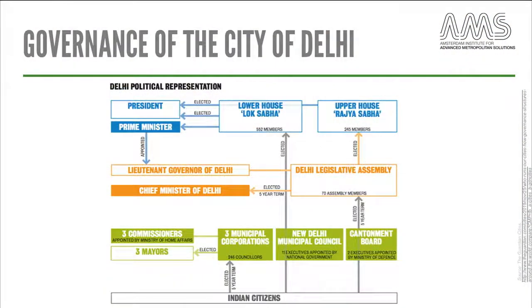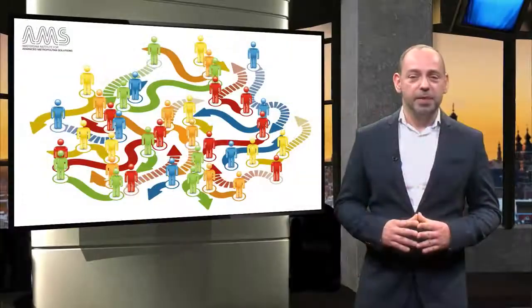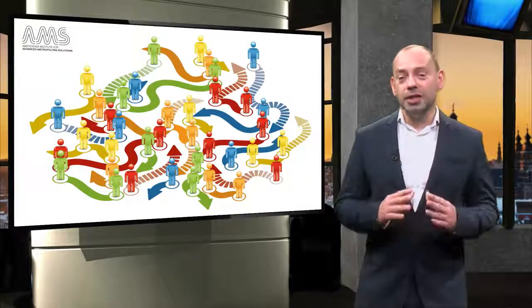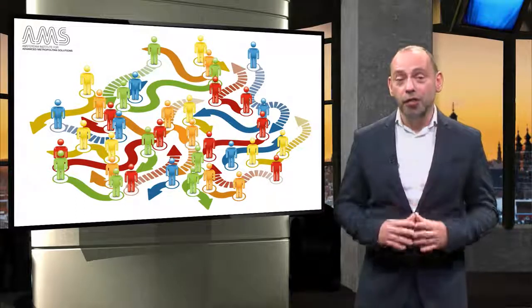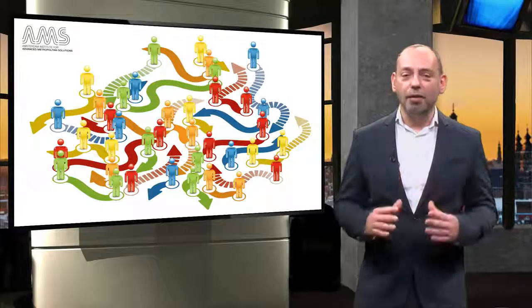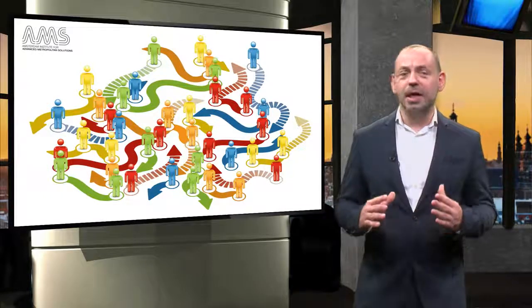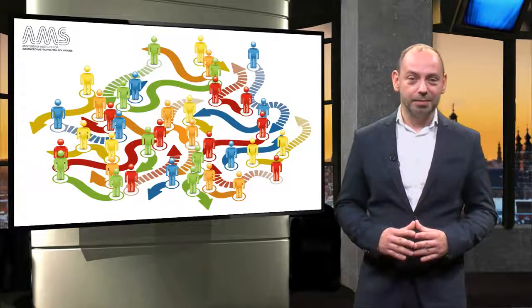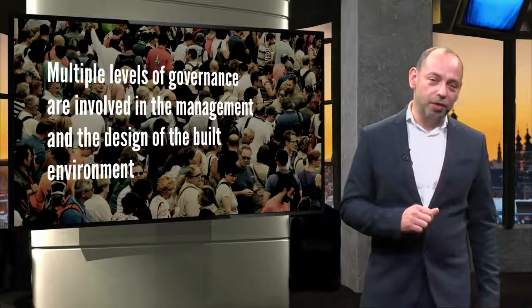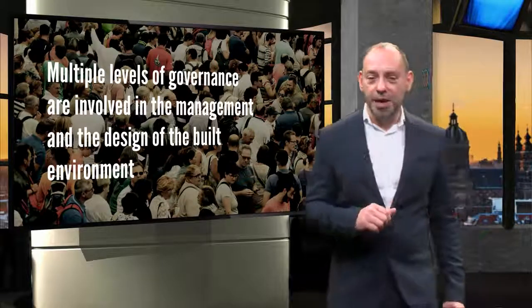Like in the example of how the governance of the city of Delhi in India is organised. Metropolitan innovators must also be able to design new relationships and tools to articulate different actors and create new forms of collaboration. This will allow them to deliver much better tailored and realistic solutions. Let's take an example of governance in which multiple levels of governance are involved in the management and the design of the built environment.